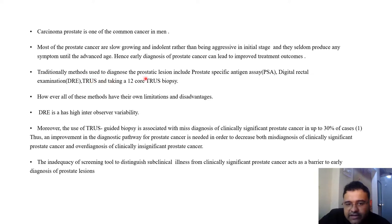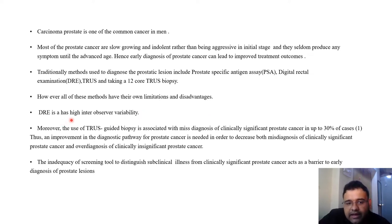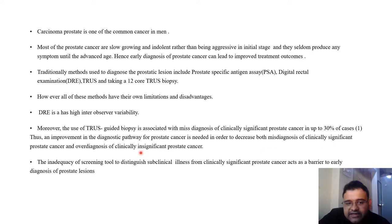Traditional methods used to diagnose the lesion include PSA, digital rectal examination, and TRUS-guided biopsy using a 12-core biopsy. However, all these methods have their own limitations and disadvantages. Digital rectal examination has high inter-observer variability. Moreover, a study found that TRUS-guided biopsy is associated with misdiagnosis of clinically significant prostate cancer in up to 30% of cases. Thus, an improvement in the diagnostic pathway for prostate cancer is needed to decrease both misdiagnosis of clinically significant prostate cancer and overdiagnosis of clinically insignificant prostate cancer.